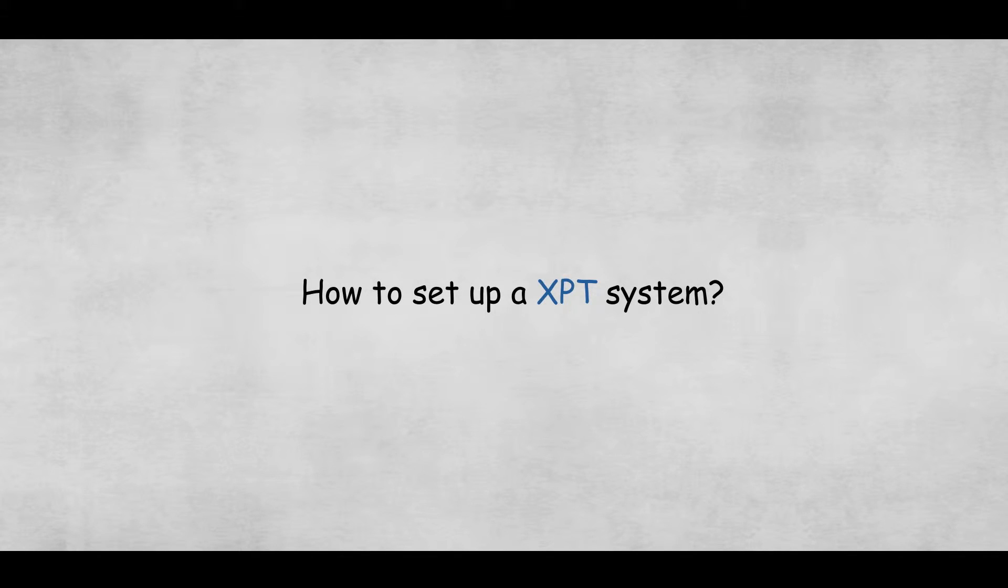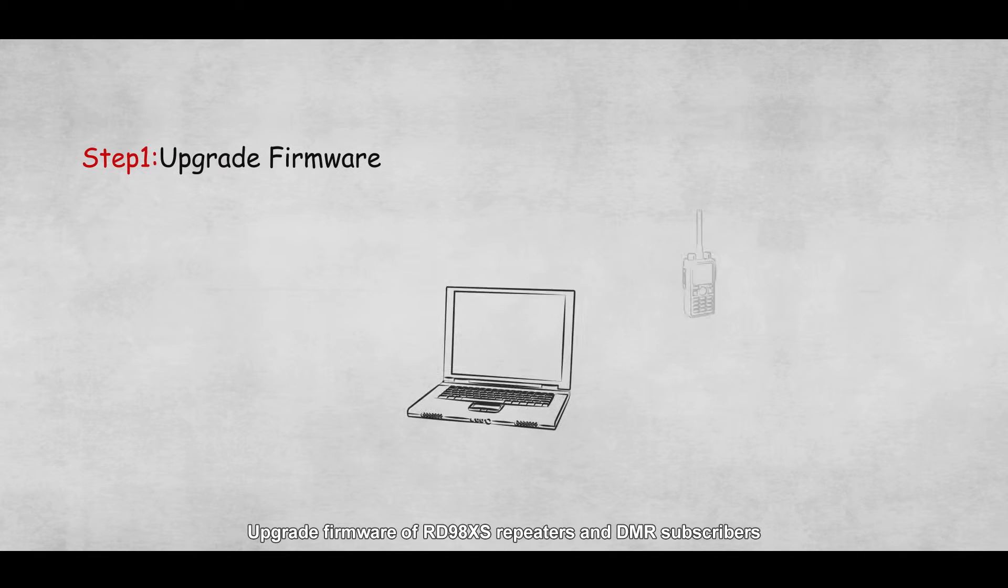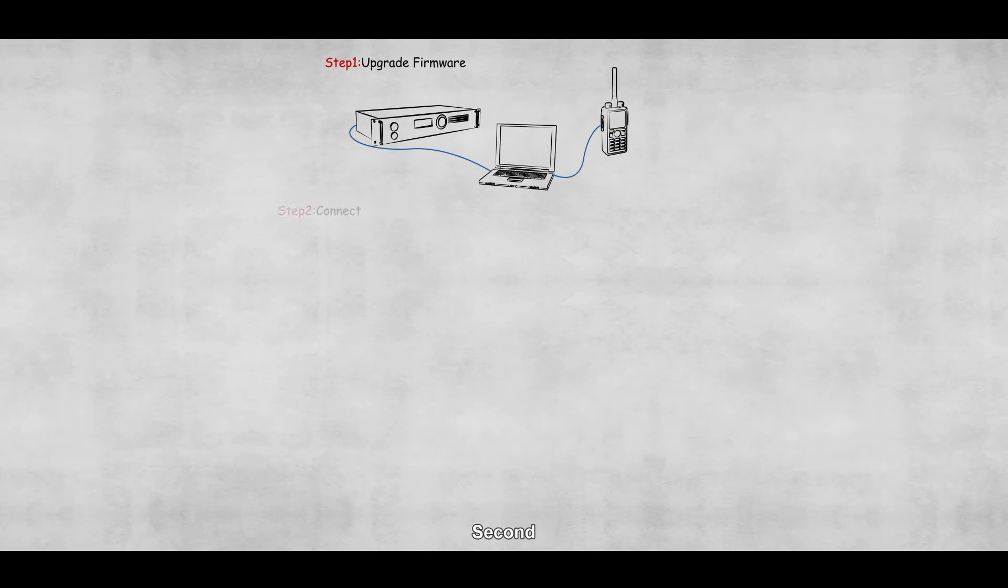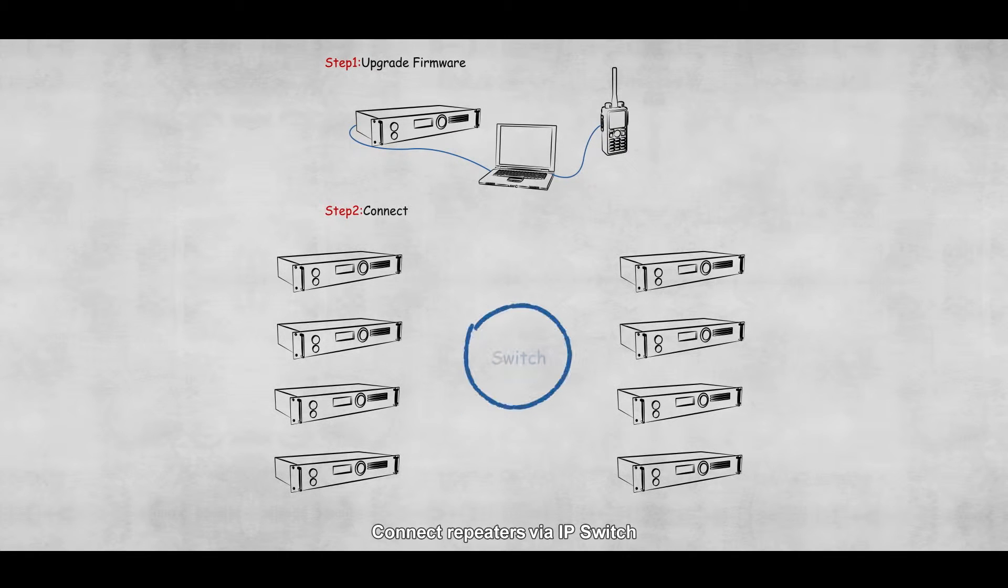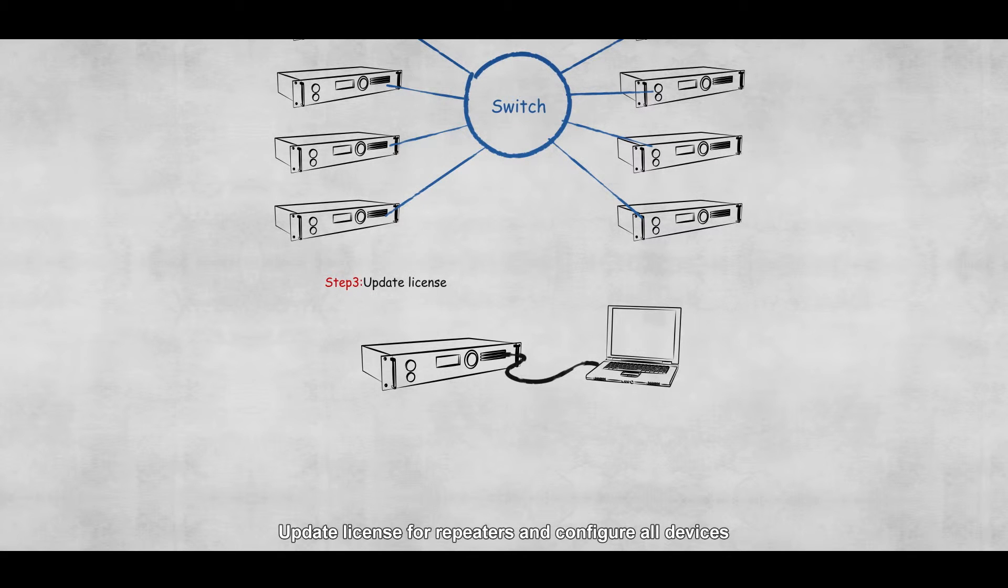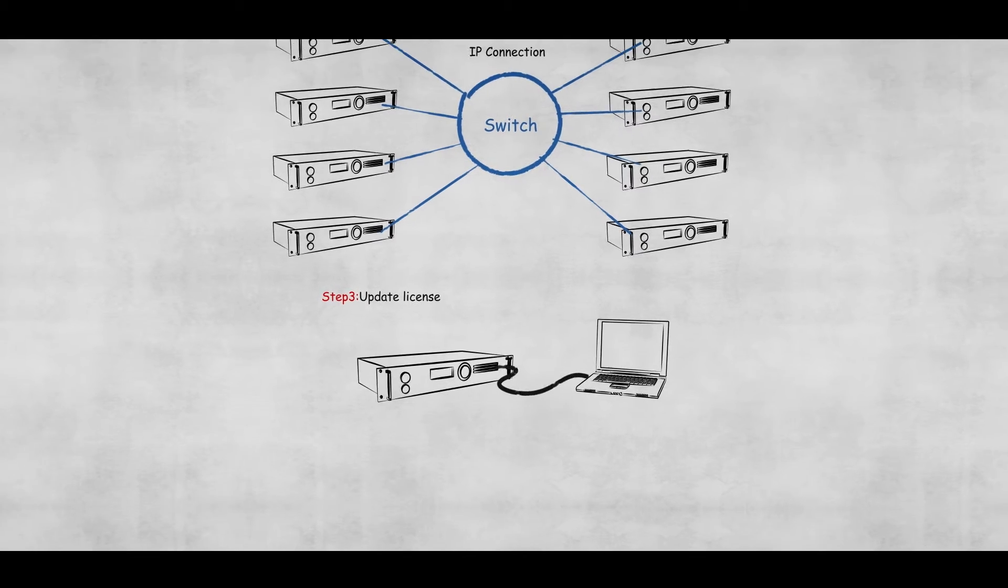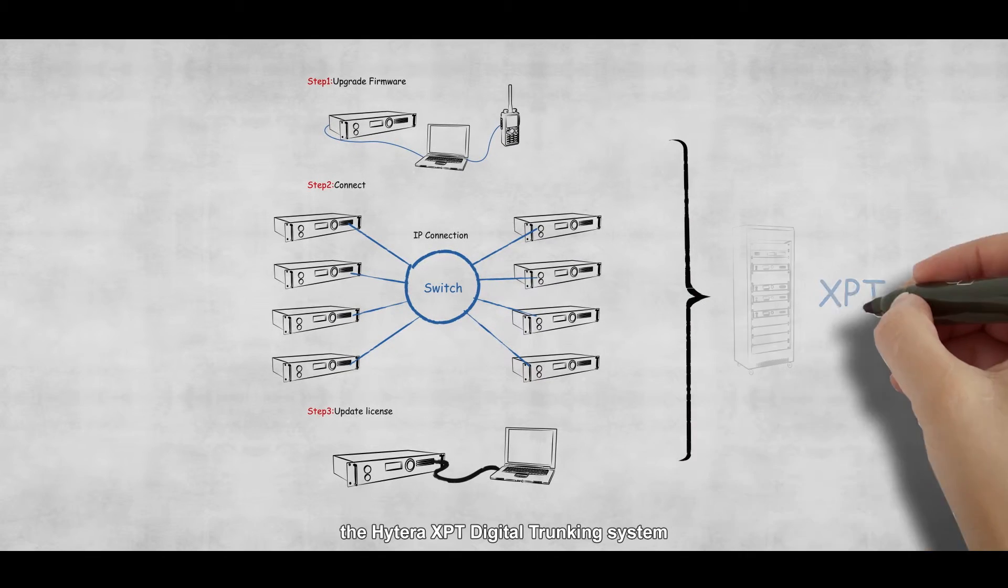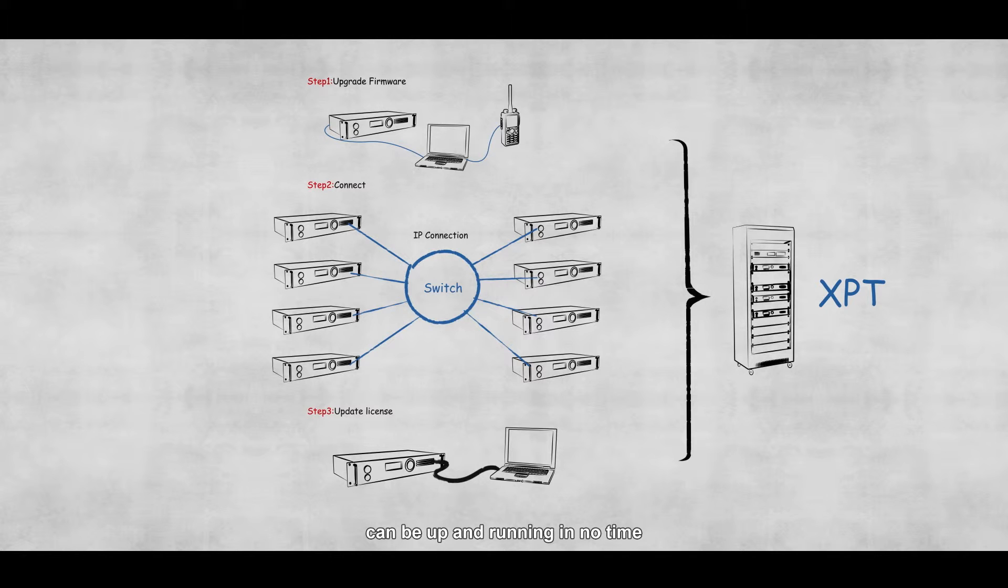How to set up a XPT system? First, upgrade firmware of RD98XS repeaters and DMR subscribers. Second, connect repeaters via IP switch. Third, update license for repeaters and configure all devices. By following these simple steps, the Hytera XPT digital trunking system can be up and running in no time.